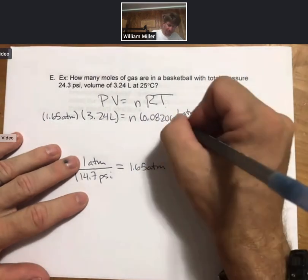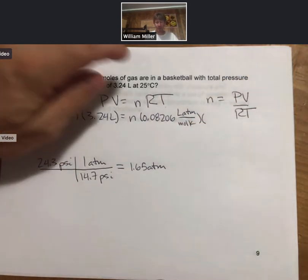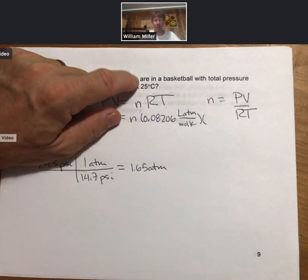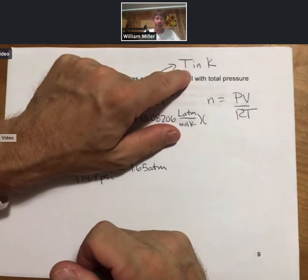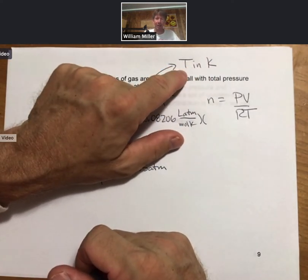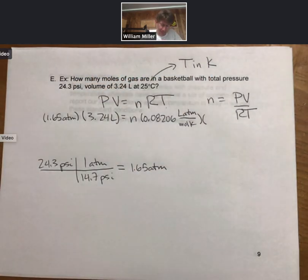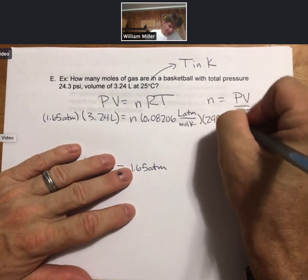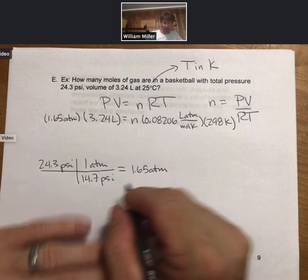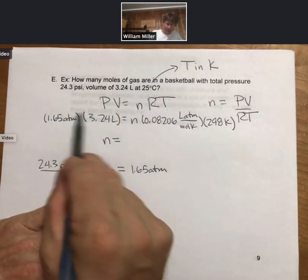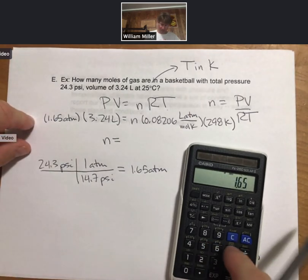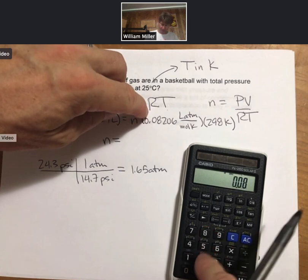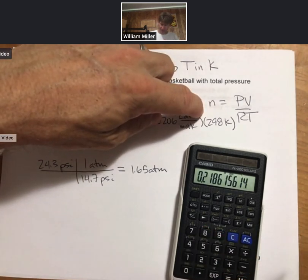From the previous slide my R is 0.08206 liter atmospheres per mole Kelvin, and my temperature is 25 degrees Celsius. And you should remember for gases in particular, all temperatures are in Kelvin. Makes me think of Tinkerbell, so tink. Take your degrees Celsius, add 273, you get 298 Kelvin. And now I have all my numbers and the only thing I have to do is solve for n. Multiply the left hand side, take the two numbers, divide by the right hand side. 1.65 times 3.24 divided by 0.8206 divided by 298 and I get 0.219.